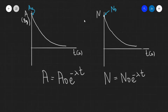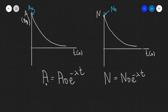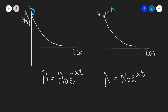So how do those two quantities depend on time? Looking at a graph of activity versus time and a graph of number of particles versus time, you'll notice that both quantities decrease exponentially — very similar to the mathematics behind capacitors. The activity A at time t equals A₀ multiplied by e to the power of minus lambda t, where A₀ is the initial activity. Exactly the same relationship holds for the number of particles: N = N₀ e^(−λt), where N₀ is the initial number of particles.